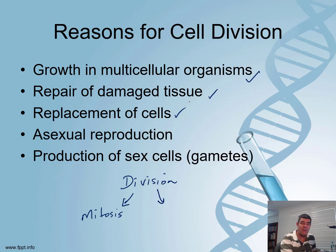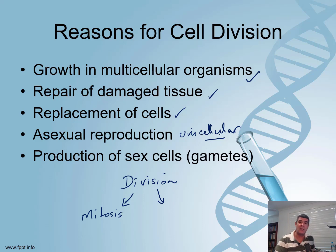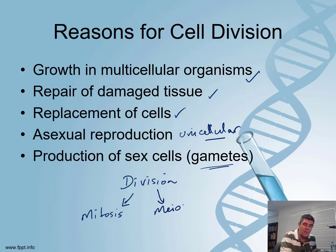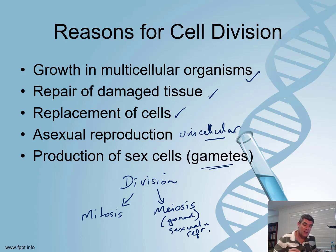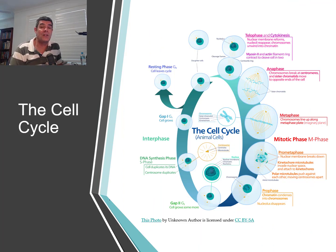We've also looked at unicellular organisms. Obviously, if an organism is unicellular then it is only one cell, and the easiest thing for it to do is, once it reaches a certain size, to divide, copy everything perfectly and identically, and produce daughter cells. There is another reason why cells divide, but it's a different type of division. We're going to be looking at that in the next of these series of videos — that is the process of meiosis, which is specifically related to gonads or the process of sexual reproduction. But this video is going to focus on mitosis and the cell cycle.